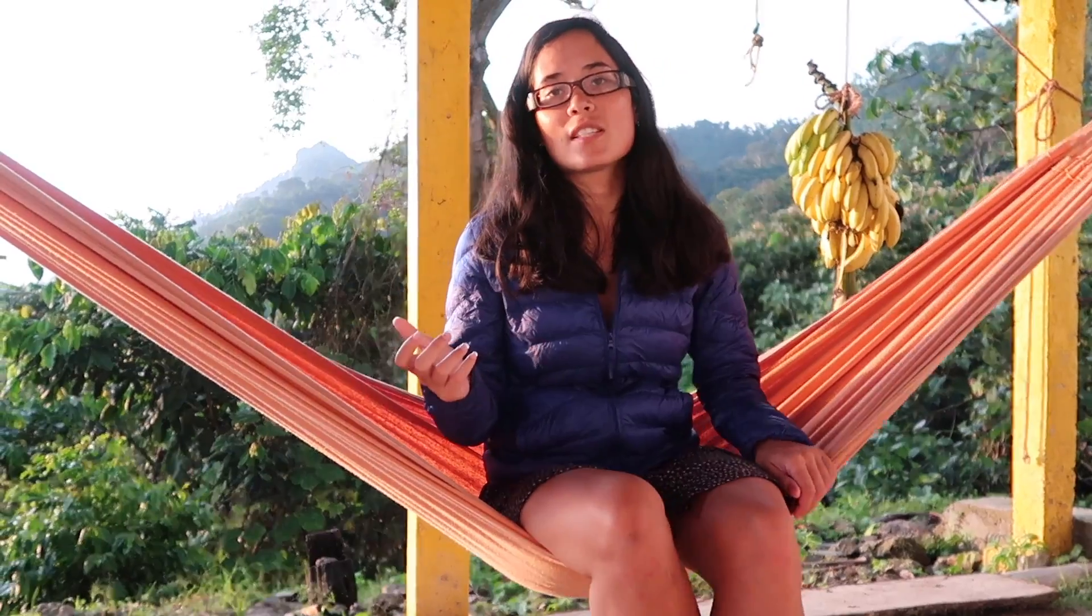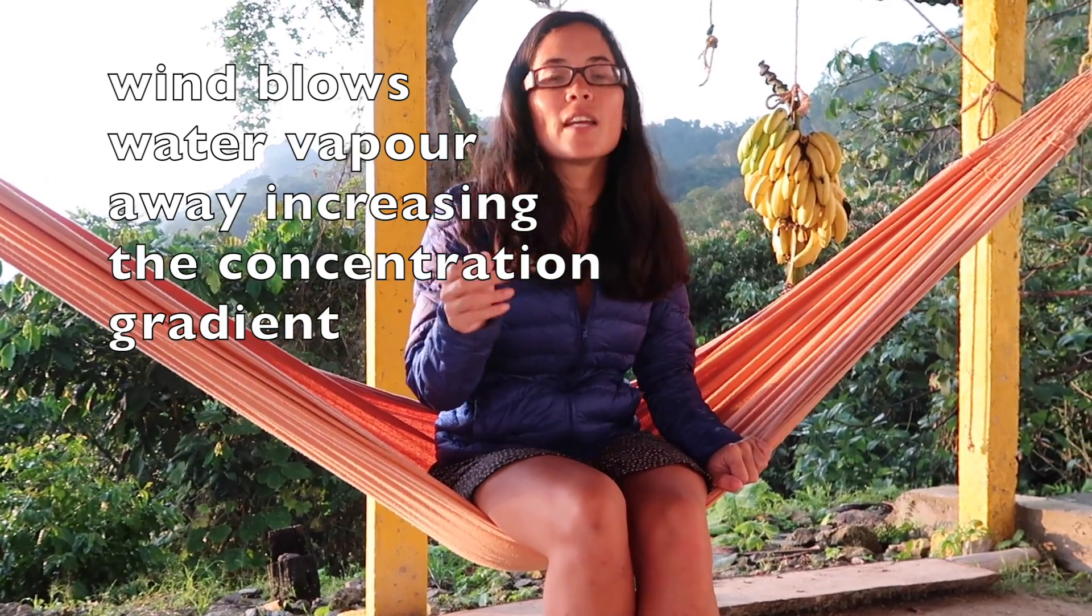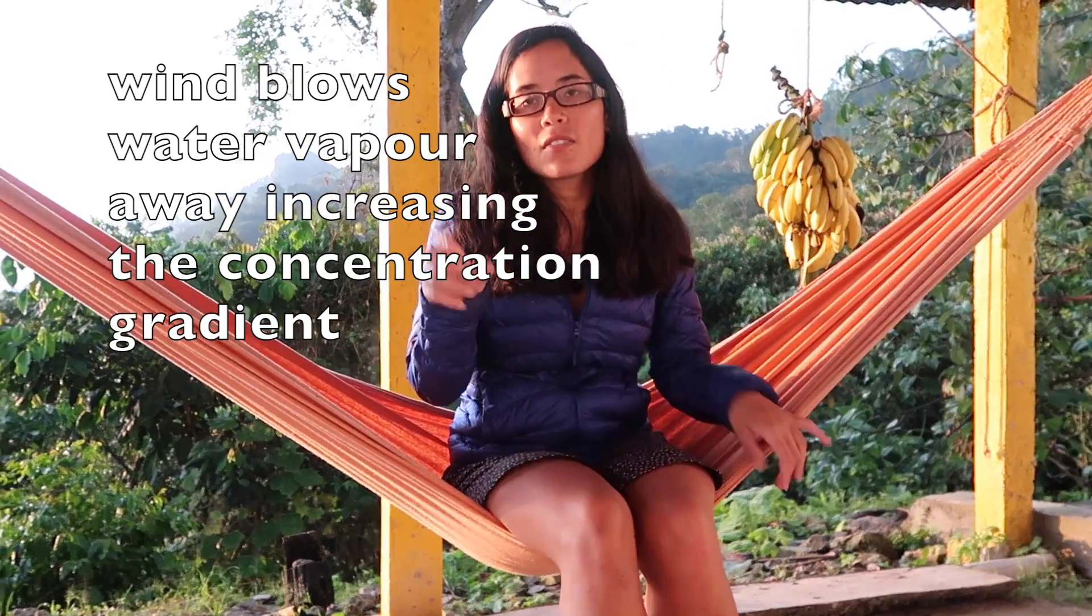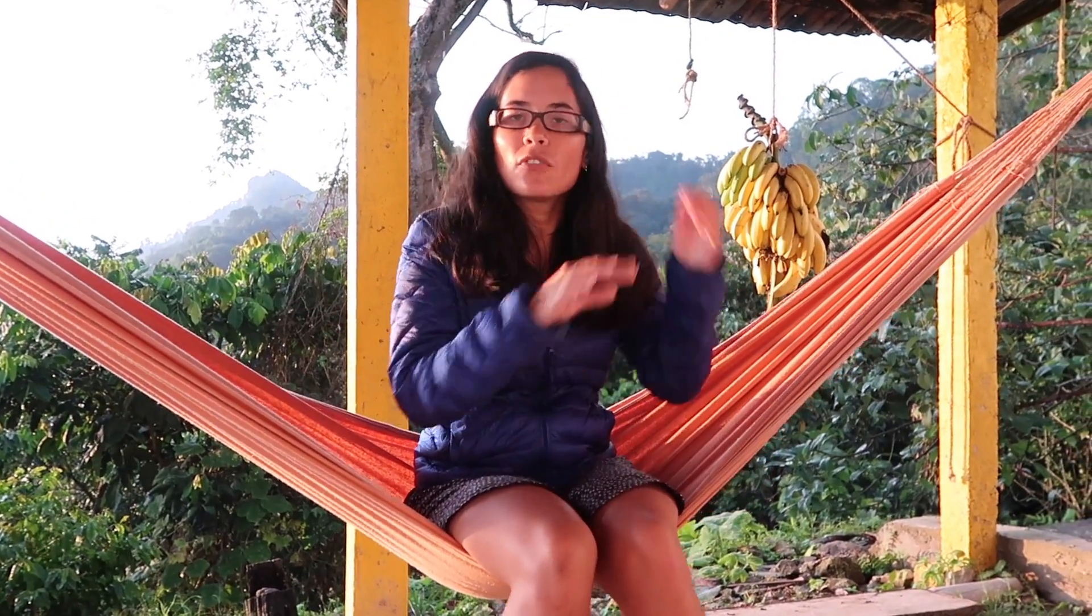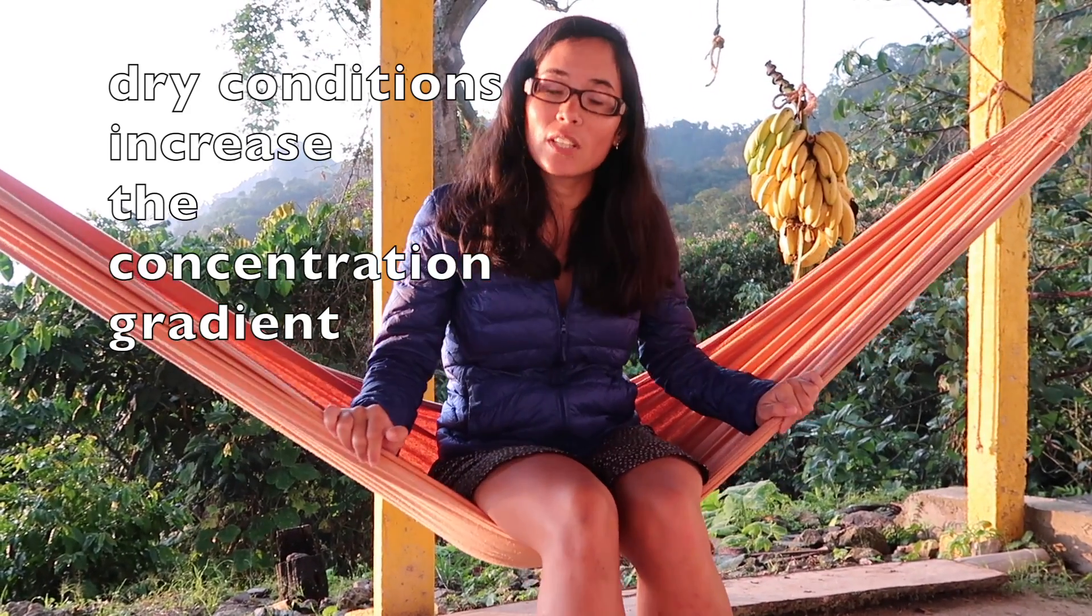First of all, windiness increases transpiration rates because what it does is it blows water vapour from the surface of the leaf. And that means that it's nice and dry surrounding the leaf. Now, if there's more water inside the leaf compared to the outside, you'll find that water will leave by diffusion far more quickly because there's a steeper concentration gradient.